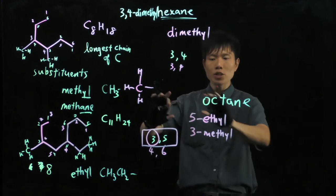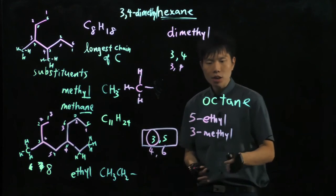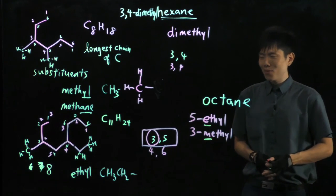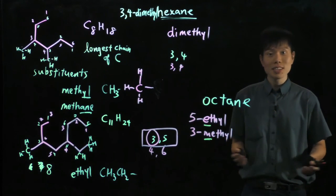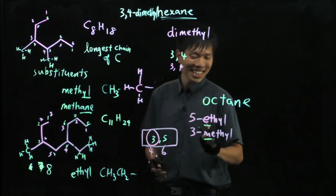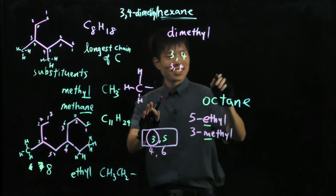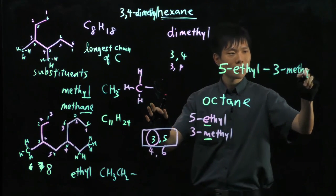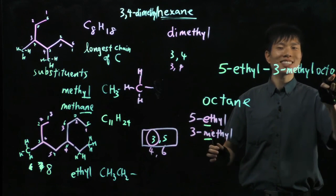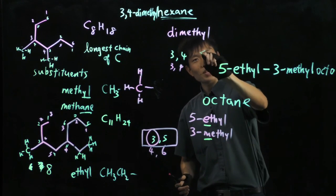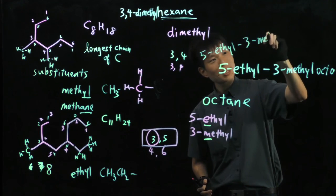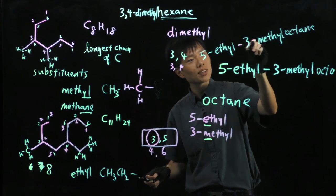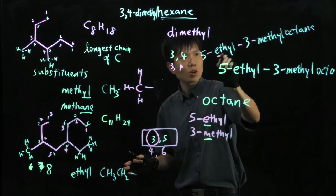Now, how do we put this back in front of the parent chain? We accord it to alphabetical order. So we look at this first. M against E. Who goes first? When you're in your nursery, your teacher will have taught you the song. A, B, C, D, E, F, G. Right? So you should know that E comes before M. And hence, we write 5-ethyl-3-methyl-octane. Just one word. And you see here, we separate numbers from letters using hyphen. So we always look at the alphabetical order for the substituents.